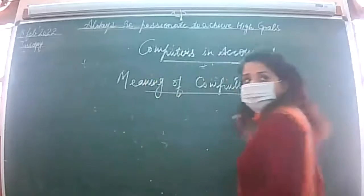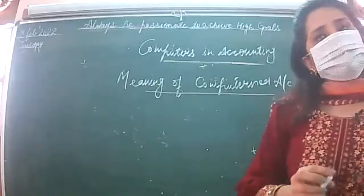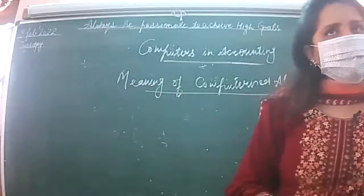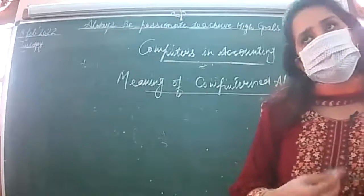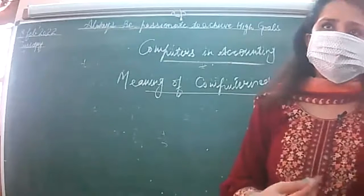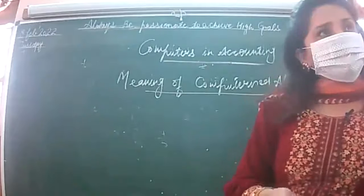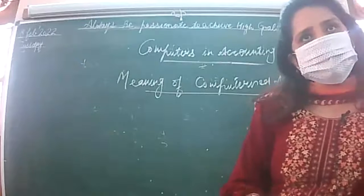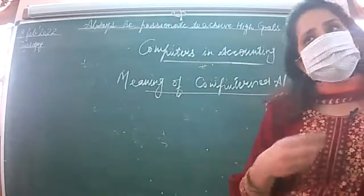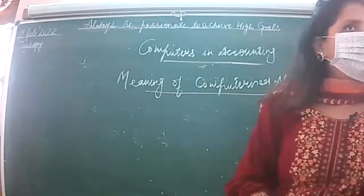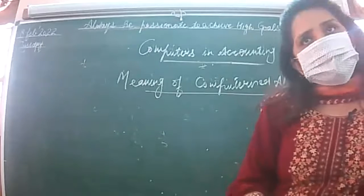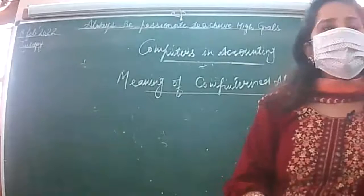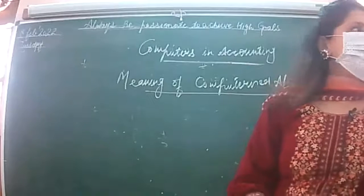The meaning of computerized accounting is automation of accounting. Automation means you don't do accounting manually. You develop certain software, feed data on your computer — with the click of your keys on your keyboard you enter the data related to your journal entry. Then you give a command and the ledgers are automatically prepared; you give a command and the trial balance is prepared; you give a command and the trading P&L or net profit appears in front of you.